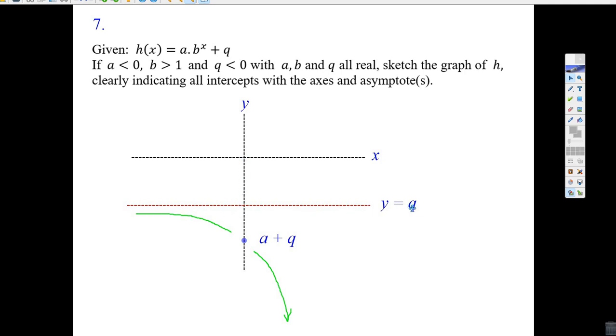There's that red line, y equals q. Well, there's a mark for that. Now, where is this thing going to cross the y-axis? All I do is let x equals zero. b to the zero would be one. It's got to cross down here and it's got to be a plus q.